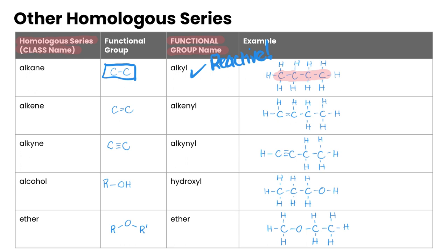Alkenes have a carbon-carbon double bond as their functional group. The functional group name is alkenyl, and we'll get into naming later. In our example, we have a carbon-to-carbon chain with one carbon double-bonded to another carbon — that is the alkenyl functional group, making it an alkene class of organic compound.